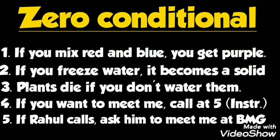For example: 'If you mix red and blue, you get purple.' Here 'mix' is V1 and 'get' is V1. Second example: 'If you freeze water, it becomes a solid.' 'Freeze' is V1 and 'becomes' is V1. Third: 'Plants die if you don't water them.' 'Die' is V1 and 'water' is V1. We can also use zero conditional for giving instructions: 'If you want to meet me, call at five.' And: 'If Rahul calls, ask him to meet me at BMG.' Both 'call' and 'ask' are V1.